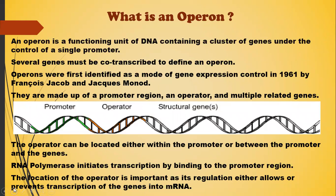First, looking at what an operon is: an operon is a functioning unit of DNA containing a cluster of genes under the control of a single promoter. The genes are transcribed together into an mRNA strand and are either translated together in the cytoplasm or undergo splicing to create a monocistronic mRNA that are translated separately — several strands of mRNA each encoding a single gene product. The result is that genes contained in the operon are either expressed together or not at all.